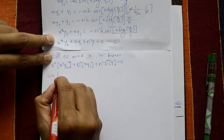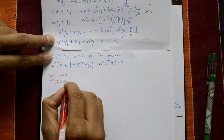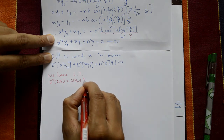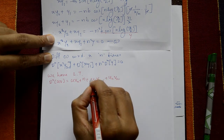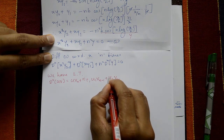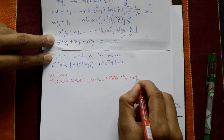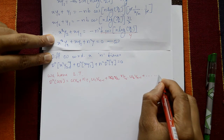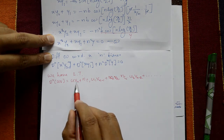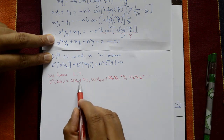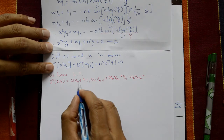Leibniz theorem: dⁿ(u·φ) = u·φₙ + nC1·u₁·φₙ₋₁ + nC2·u₂·φₙ₋₂ + ... where u₁, u₂, ... are successive derivatives of u, and φₙ, φₙ₋₁, ... are the nth and lower derivatives of φ.